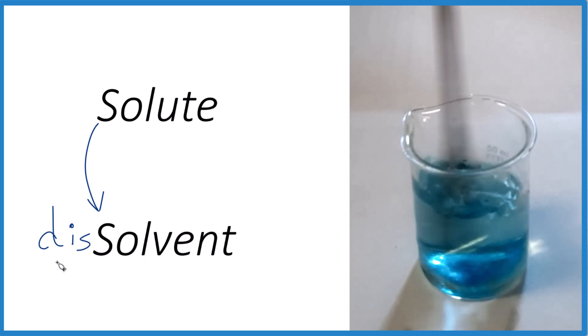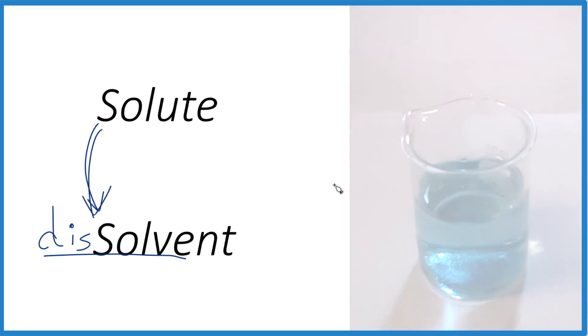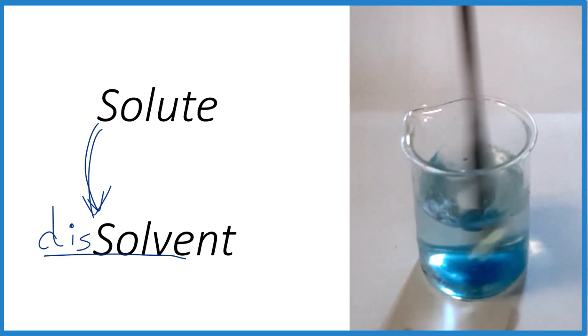The word solvent has 'dissolve' right in it. We're dissolving the solute in the solvent. You can actually see here in this image there's a little bit of the solute at the bottom, that solid at the bottom that's not dissolved yet in the solvent. If we keep stirring, that solute will dissolve in the solvent.